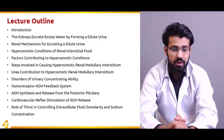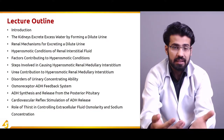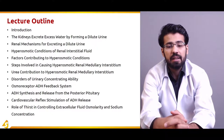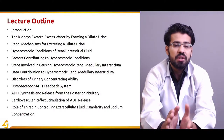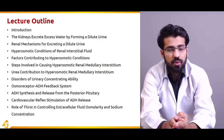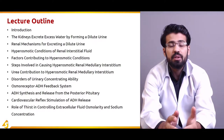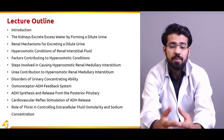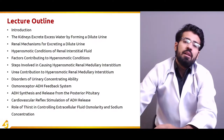After that, we will discuss osmoreceptors and the ADH feedback system — how osmoreceptors detect excessive or limited water through various mechanisms, including blood volume and blood pressure, which increase or decrease ADH production. We will discuss how ADH synthesis occurs and under what circumstances ADH is released from the posterior pituitary. Then we will discuss cardiovascular reflex stimulation of ADH release, including variations in blood pressure and blood volume. Finally, we will discuss what role thirst plays in controlling extracellular fluid osmolarity and sodium ion concentration.